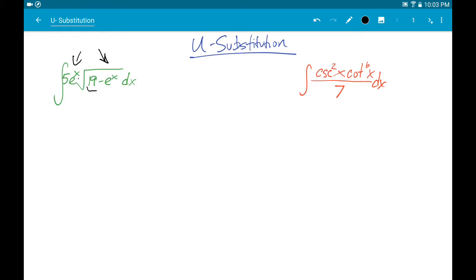Meaning, if I think of this inside piece as a function, the derivative of the inside pops out here on the outside of the radical. And if you have that relationship, you got a pretty good shot that u-substitution might be the method for you.